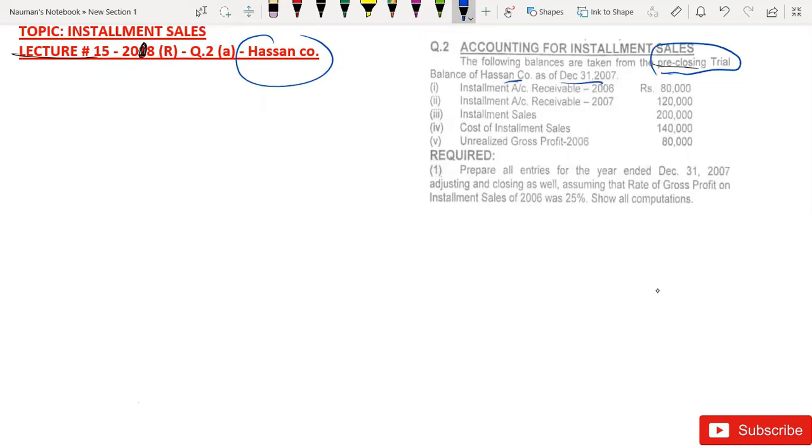The balance is taken from Hassan company. The installment account in 2006 has a balance of 80,000. In 2007 the balance is 20,000. At this point we are making the first entry: installment account receivable debit.